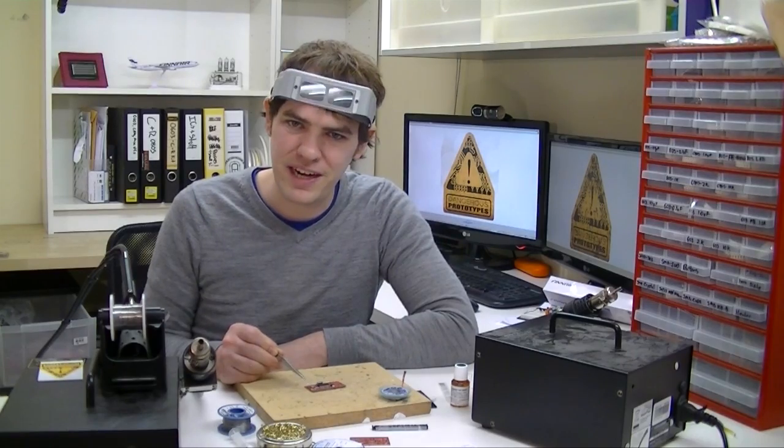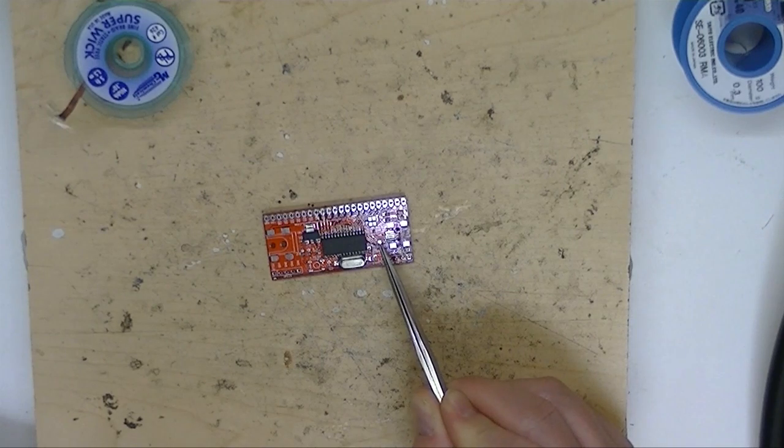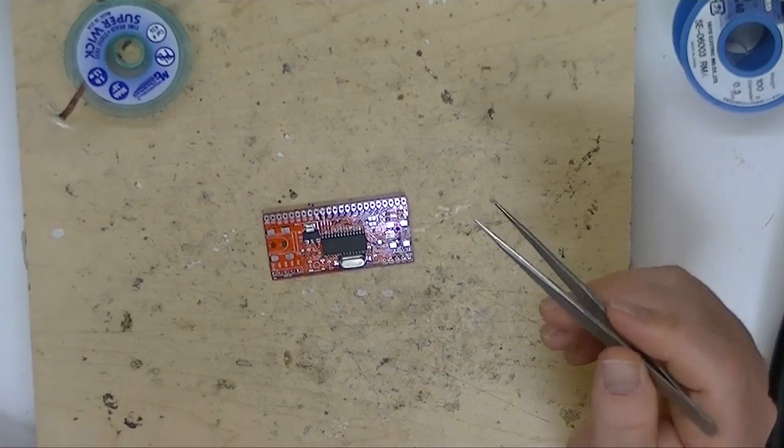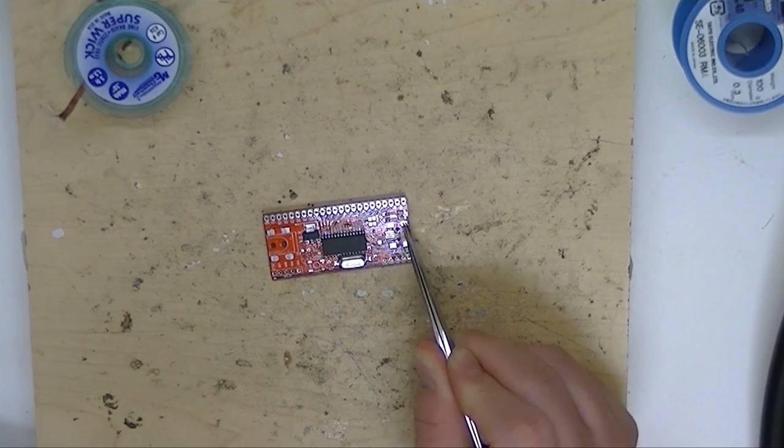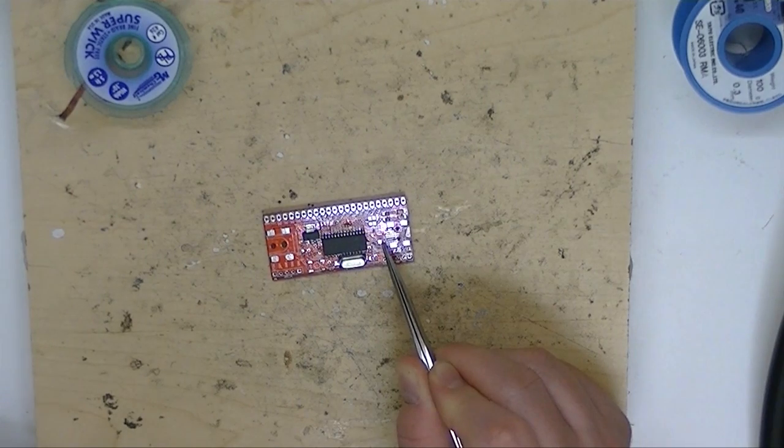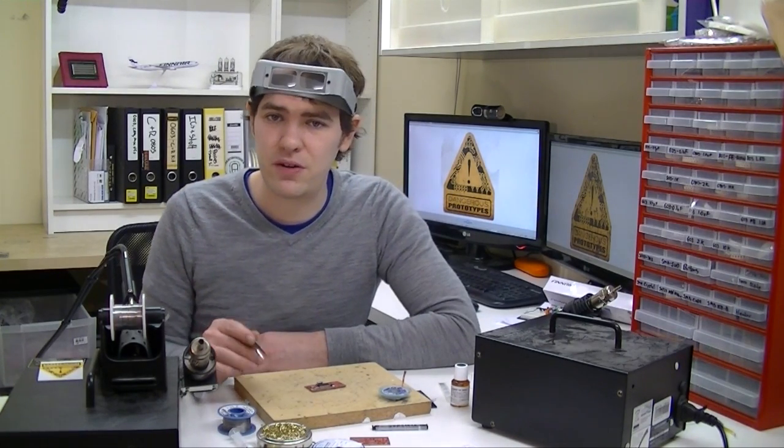Now we've got to do the USB connector and this ferrite bead or inductor L1 that goes right next to it. This is a tight area so first I'm going to solder the USB connector in. And then I'm going to solder the inductor in. The ferrite beads cause a lot of people problems. They don't know which ones to choose.